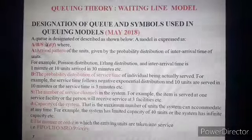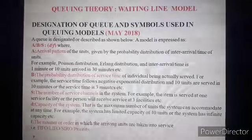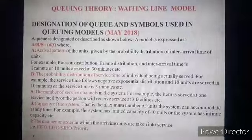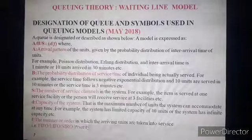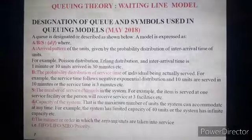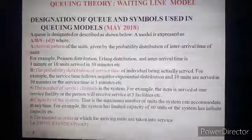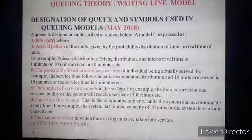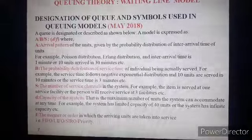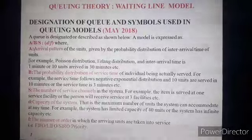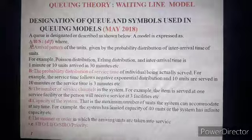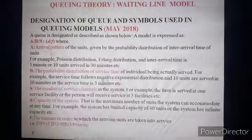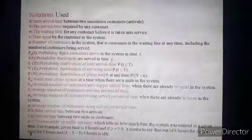Capital S in this model is the number of service channels — whether we have a single-channel or multi-channel system. Small d stands for the capacity of the system, that is, how many customers can be served. Capital F is the manner or order in which arriving units are taken into service — whether FIFO, LIFO, or SIRO. This general designation allows us to define any waiting line model using A, B, S, d, and F.